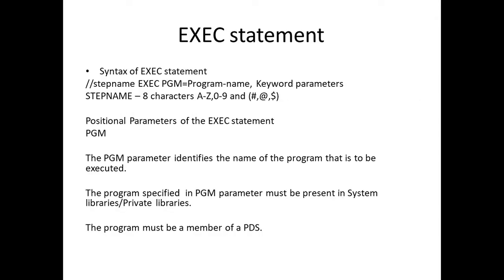The EXEC statement comprises the following parts: two slashes, then the step name, then the EXEC operation and PGM — PGM equal to program name. In PGM, we mention the name of the program to be executed. PGM is a positional parameter, followed by keyword parameters. The step name is a maximum of eight characters in length. It can comprise A to Z, zero to nine, and the national characters: hash, at, and dollar. It cannot begin with a numeric but can begin with an alphabet or national character.